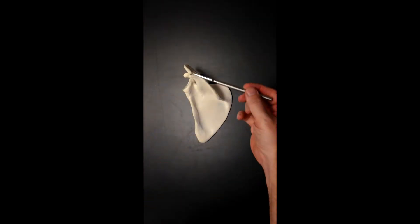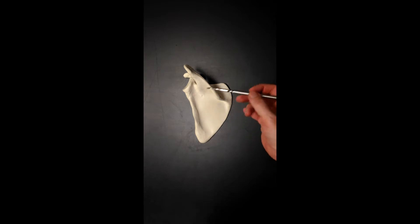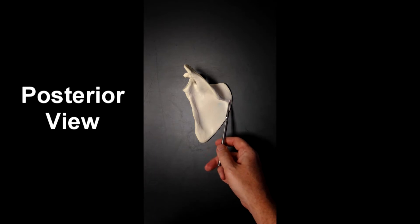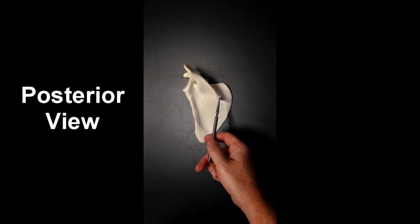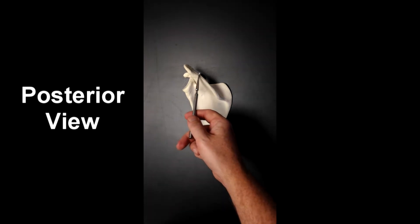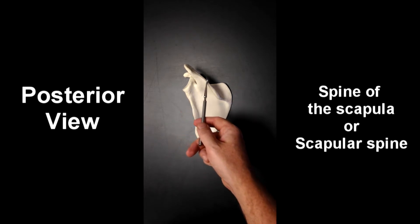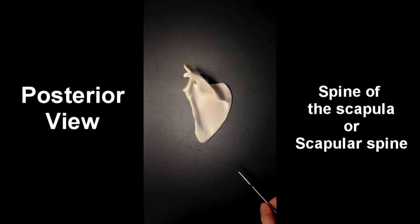Right now, we're looking at the posterior view of the scapula, and what we're seeing here is that, similar to our bodies, our spine is on our back. The spine of the scapula is also on the back of the scapula. So this is how we would tell that this is the posterior aspect of the scapula.